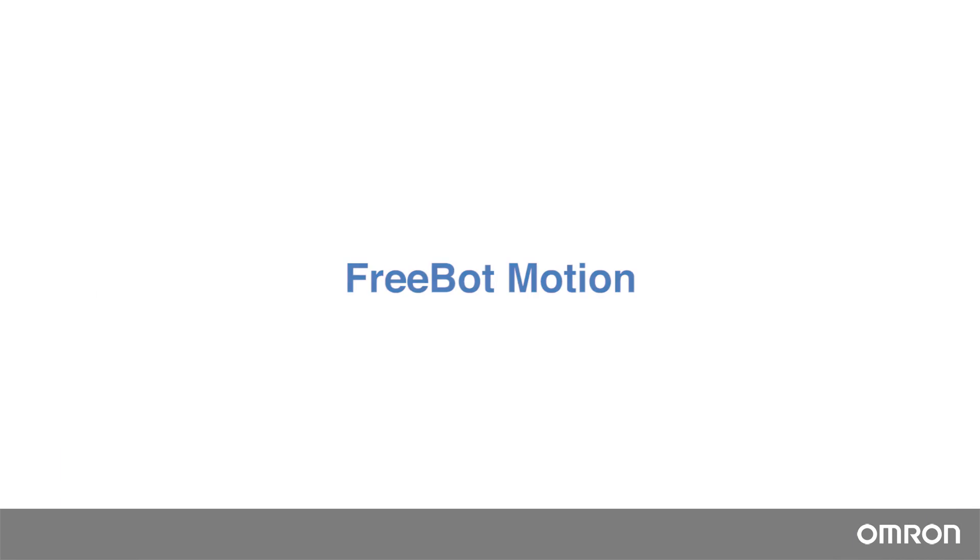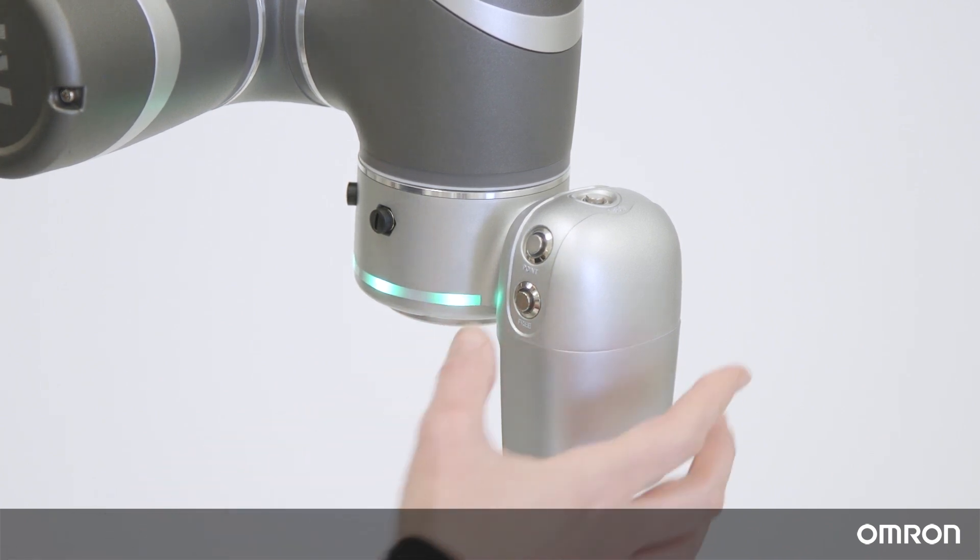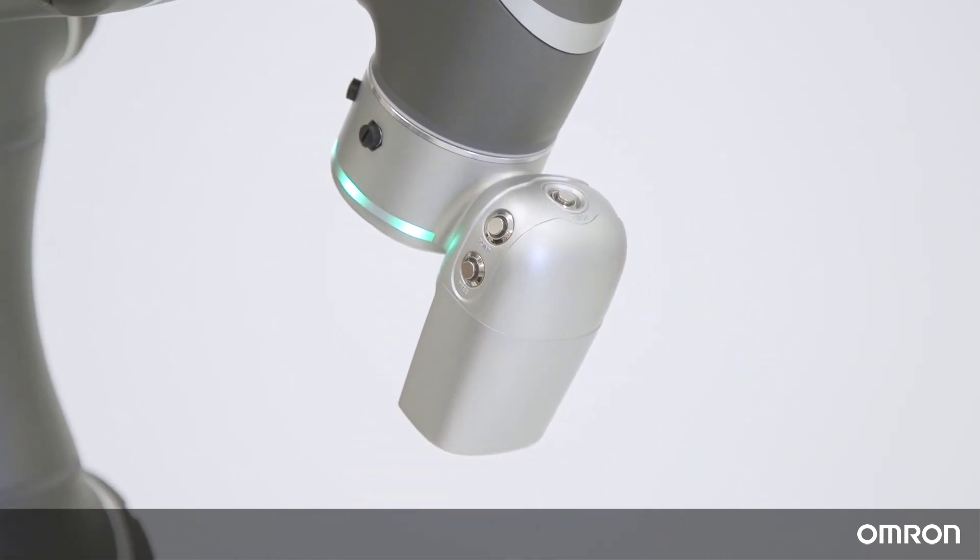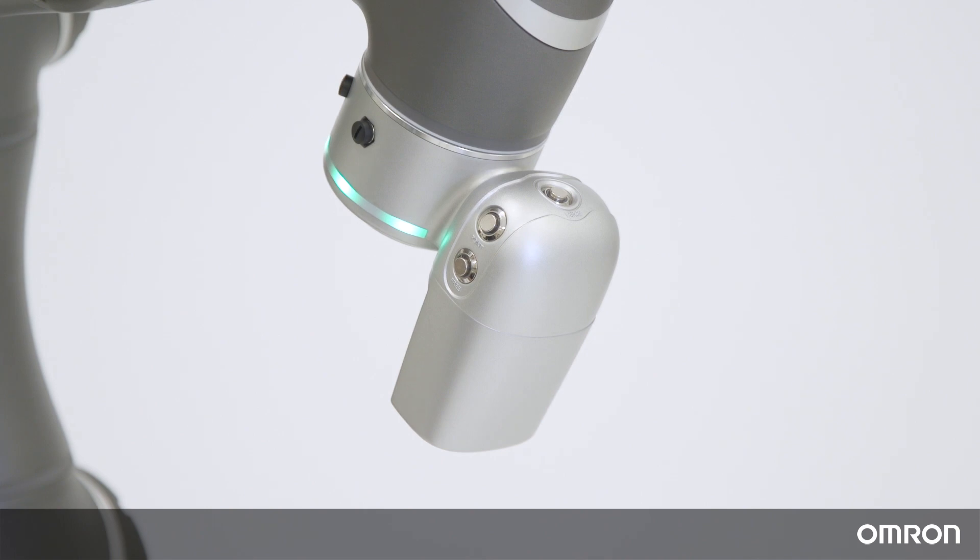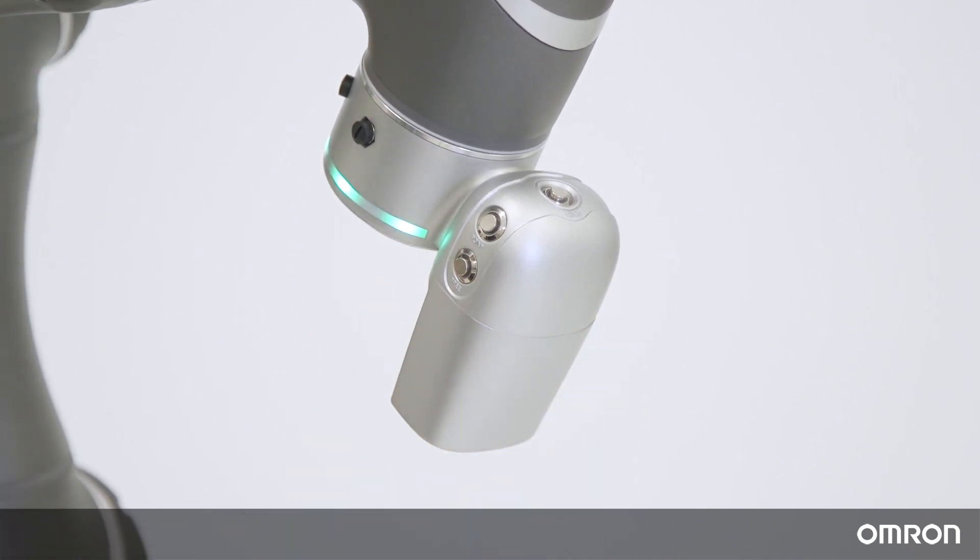Take a look at the end of the cobot arm. You will see three buttons. This button on the right is called the Free button. Hold this button down to move the cobot freely with your hand. Now try moving the cobot without holding this button. You can see that it will not move. The Free button enables you to move the robot easily.